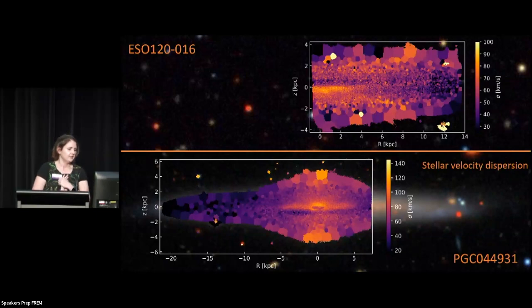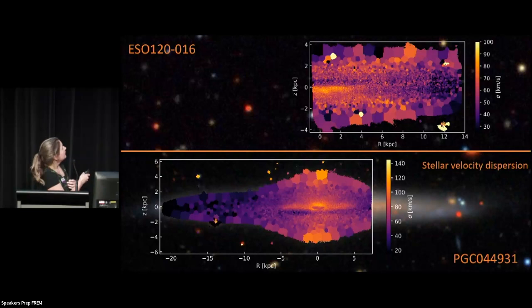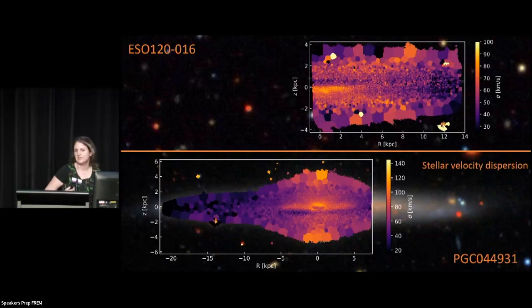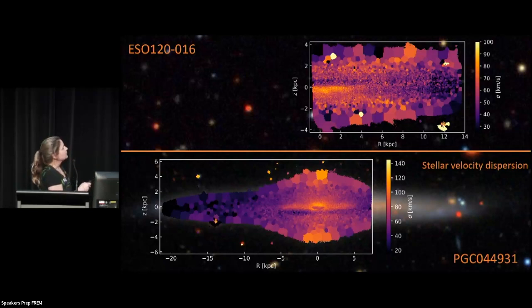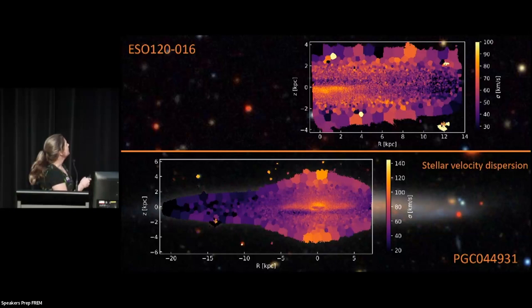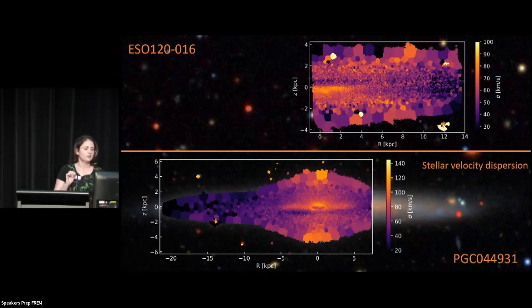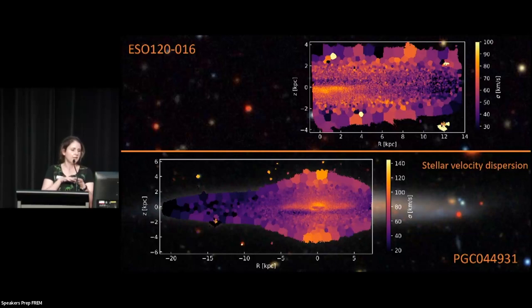We've also got the stellar velocity dispersion. The top one looks fairly normal — those stripy things are caused by the dust lanes, and dust is going to be a problem in an edge-on galaxy. But there's a fun feature in PGC — this little feature in the center, which we've been referring to as the croissant. What I think it is, is a region of low velocity dispersion caused by this very dynamically cold nuclear disk rotating nicely, and then some less dynamically cold stuff around it.